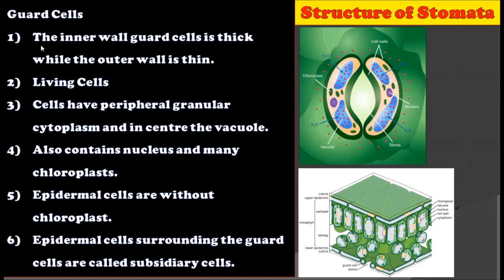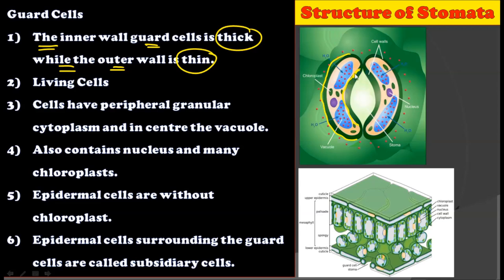Now let's talk about the guard cells. The inner wall of the guard cells is thick, while the outer wall is thin. As you can see in this picture, this is the outer wall of the guard cell, while this is the inner wall of the guard cell. This inner wall is very thick as compared to the outer wall. The inner wall having the secondary deposition is very thick, while the outer wall of the guard cells is thin in nature.